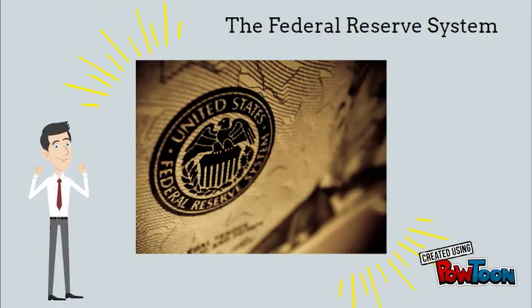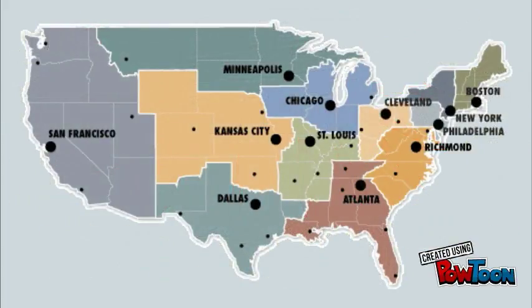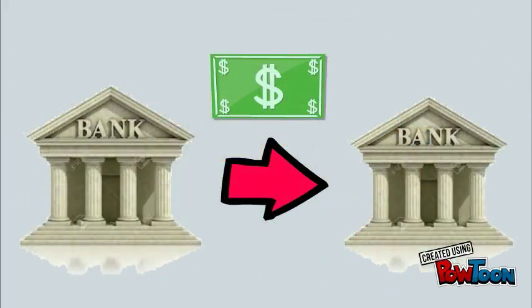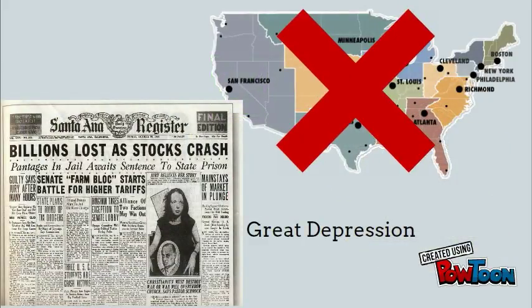The Federal Reserve System was composed of a group of 12 independent regional banks in which the banks could lend to other banks during times of need. However, the system did not work well during the Great Depression because the 12 regional banks acted independently.